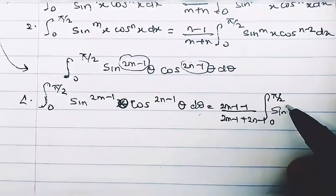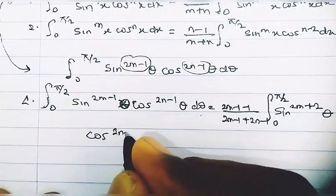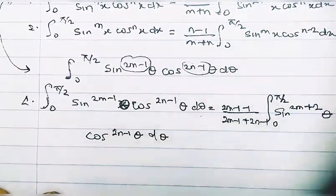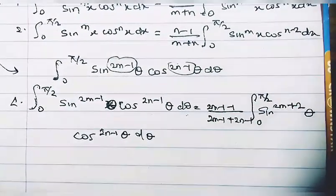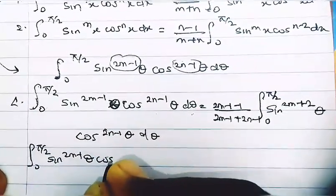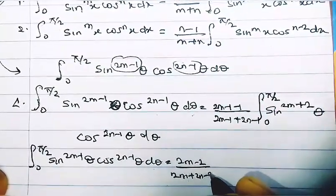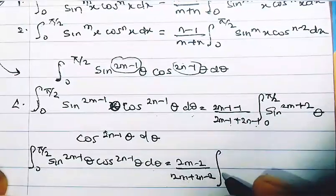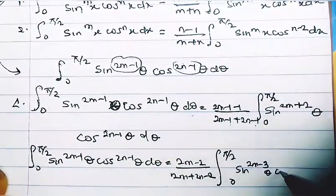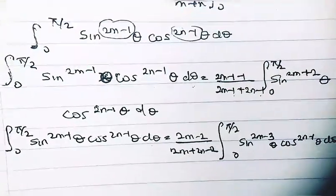Simplifying, the integral from zero to pi/2 of sine^(2m-1)(theta) cos^(2n-1)(theta) d-theta equals (2m-2)/(2m+2n-2) times the integral from zero to pi/2 of sine^(2m-3)(theta) cos^(2n-1)(theta) d-theta.